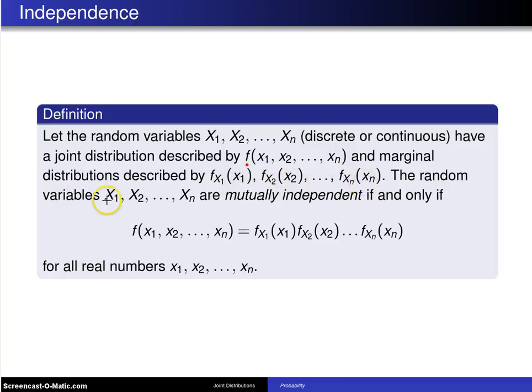The random variables x1, x2, up to xn are mutually independent, and that's what's being defined here, if and only if the joint distribution,